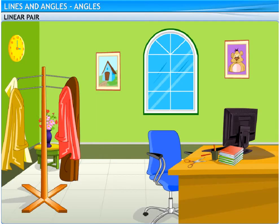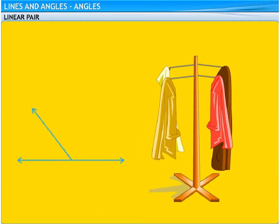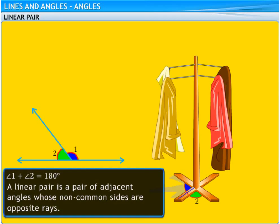Even the legs of the clothes stand in Tom's room form adjacent angles. But, did you notice that the non-common arms of these angles are opposite rays that form a line? So, we can say that the sum of the angles equal to 180 degrees or the angles in a linear pair are supplementary.